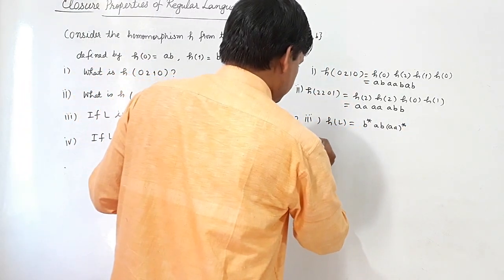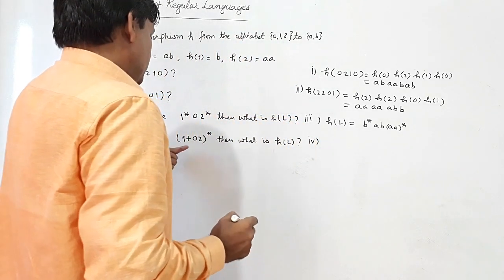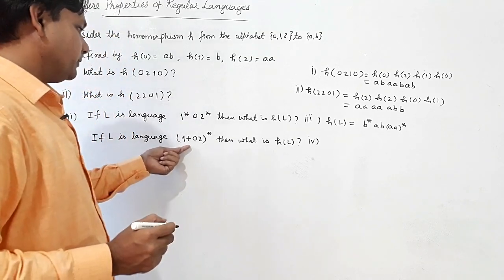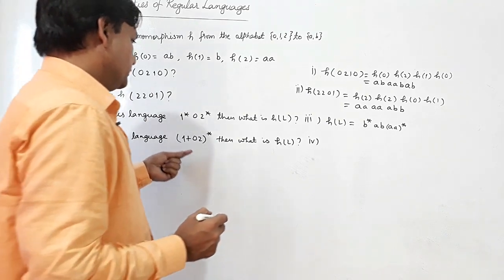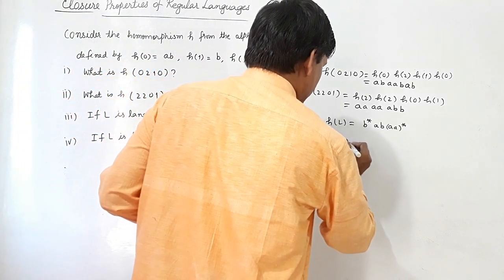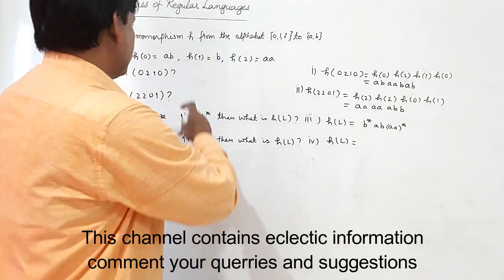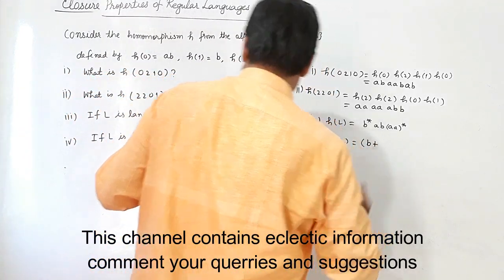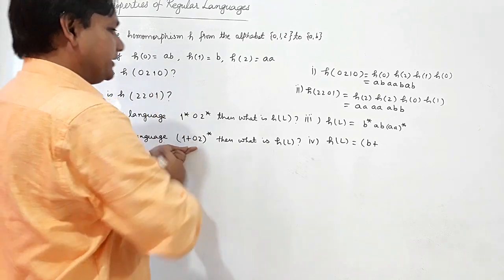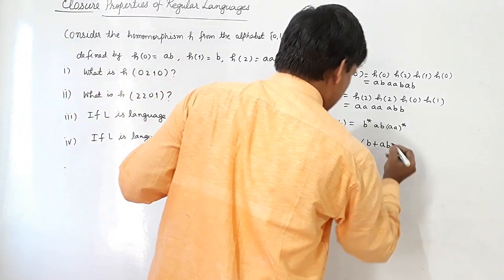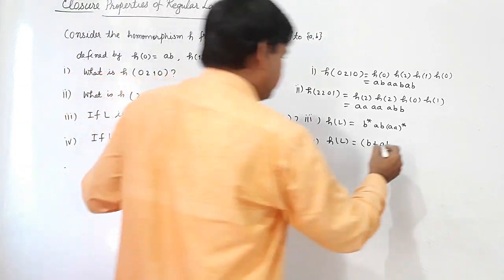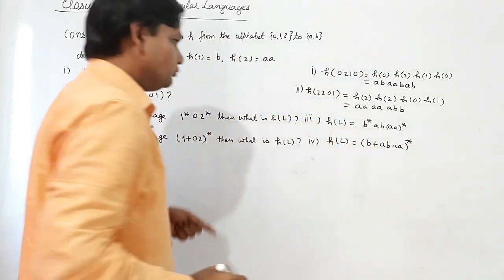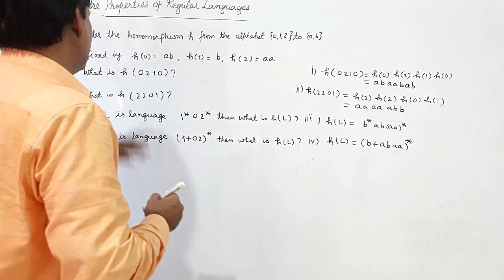For the fourth part, if language L is denoted by (1 + 0·2)*, then H(L) is obtained by substituting H(1) = B, H(0) = AB, H(2) = AA, giving H(L) = (B + AB·AA)*. These are the solutions to the problems on homomorphism.